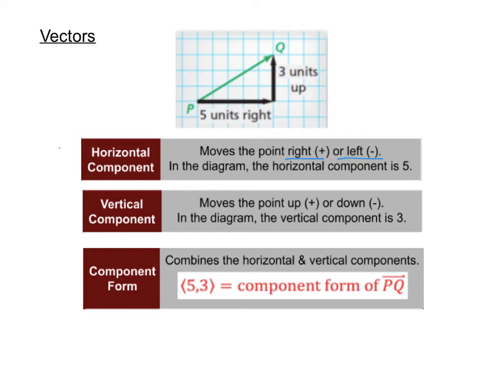Think of the horizontal component as like the x value. On a coordinate plane, the x value tells us how many to go left or right. So positive x's are to the right. So positive horizontal component, I'm going to go to the right. Negative x's are on the left of the coordinate plane.